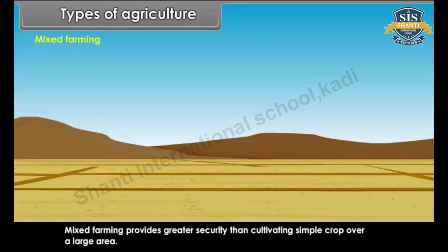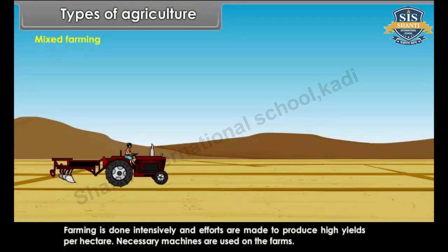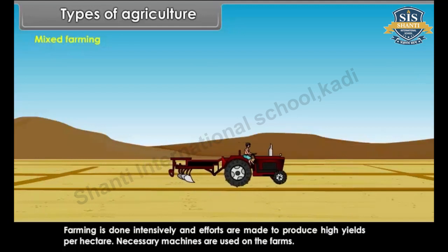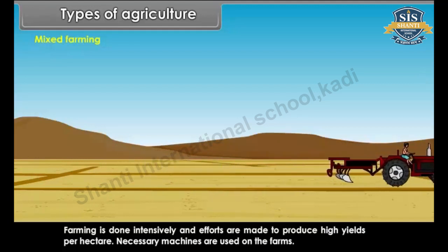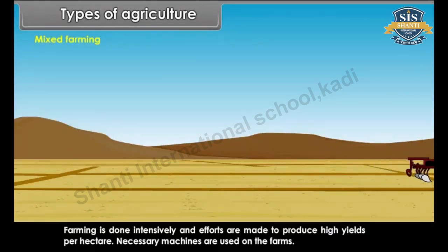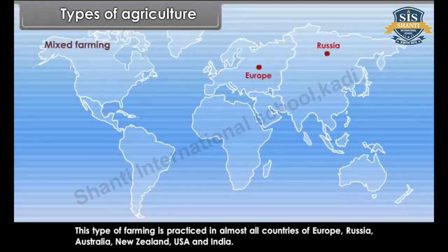Mixed farming provides greater security than cultivating a single crop over a large area. Farming is done intensively and efforts are made to produce high yields per hectare. Necessary machines are used on the farms. This type of farming is practiced in almost all countries of Europe, Russia, Australia, New Zealand, USA and India.